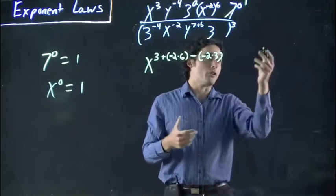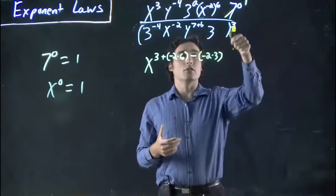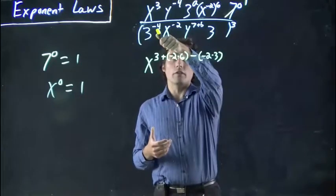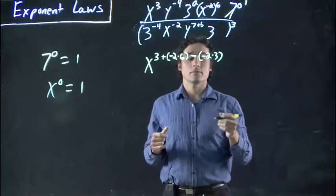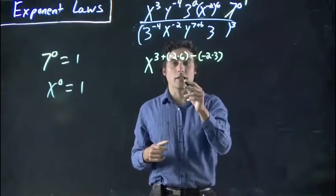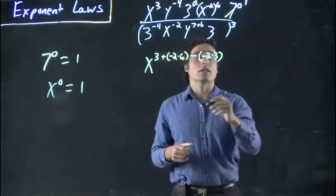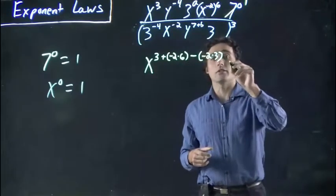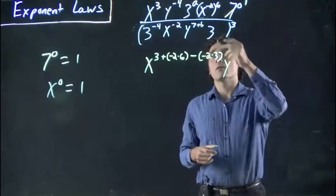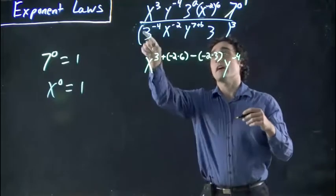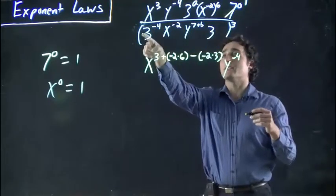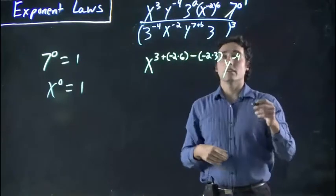So this would be our x term right here. Then if we looked at our y term, might run out of room a bit, y to the minus 4. And then where else do we have y's? Ah, only there. So again, it's dividing our term, so we'd be subtracting.